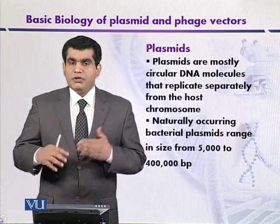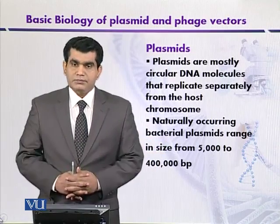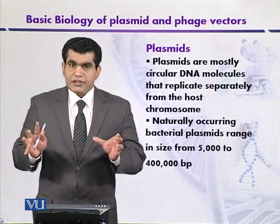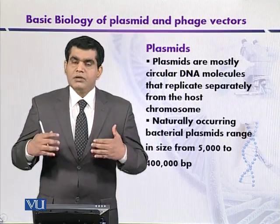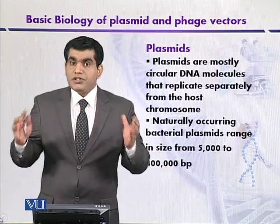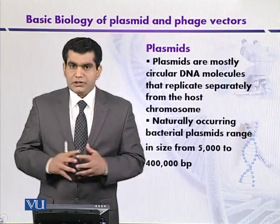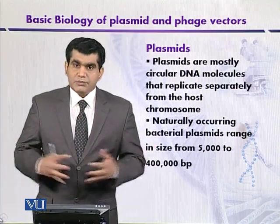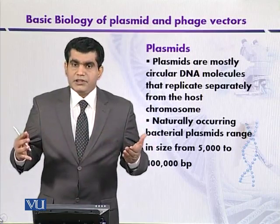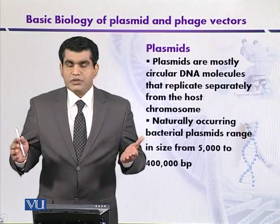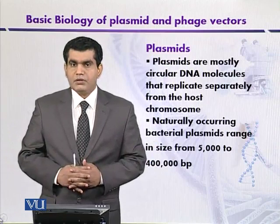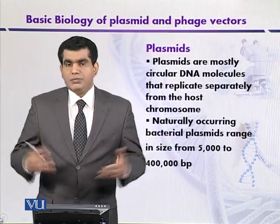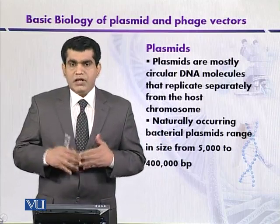Lambda phage vectors can carry target DNA of up to 24,000 bases or 24 kilobases. Some plasmids that contain the cohesive sites of phage vectors — necessary for phage particle packaging — are called cosmids, and they can transfer target DNA ranging from 34 to 47 kilobases. Other vectors called phagemids have also been developed from f1 phages.